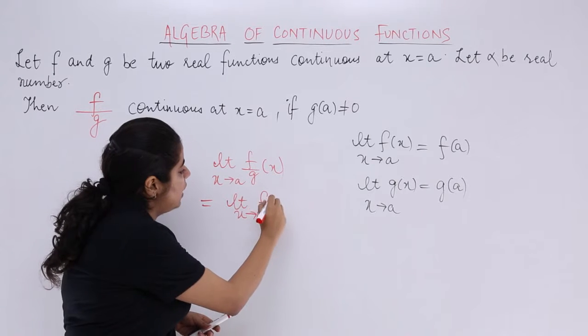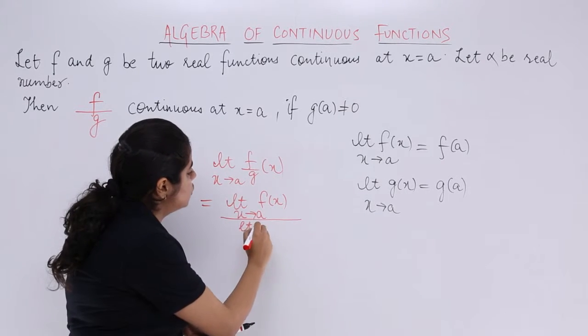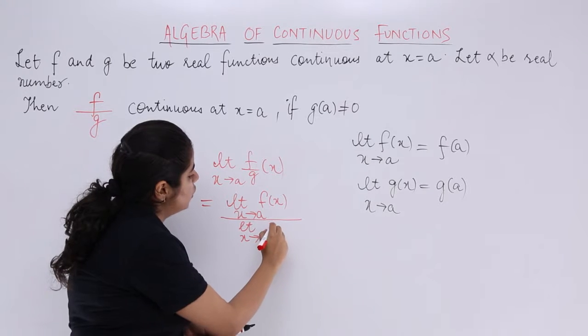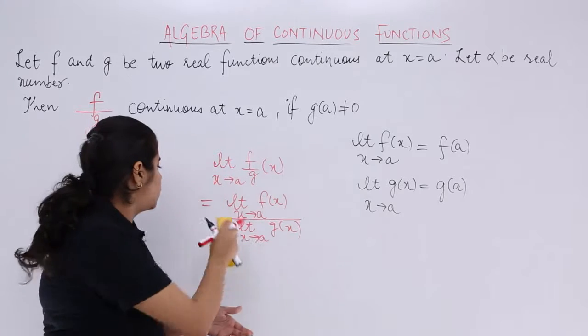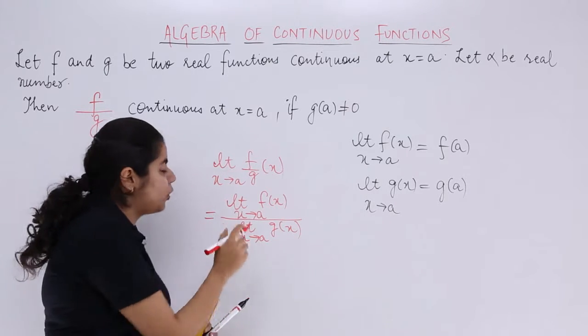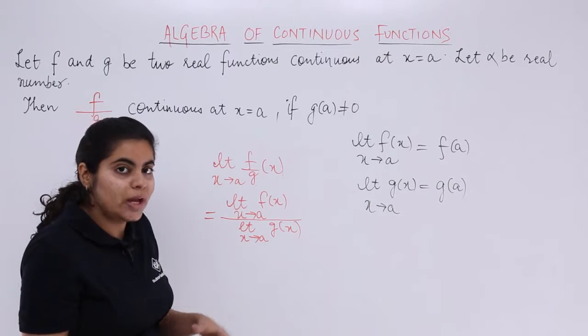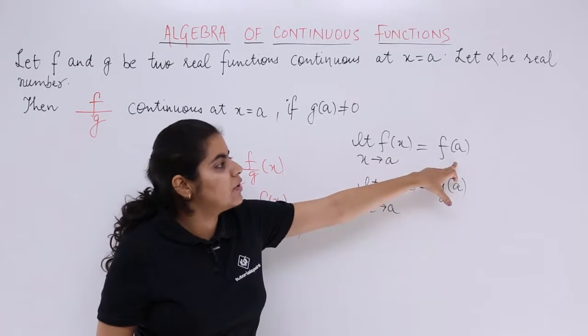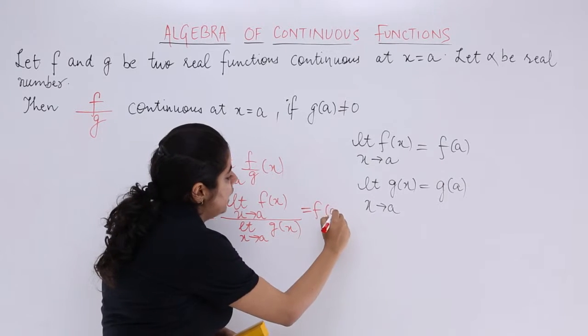So limit x tends to a f(x) divided by limit x tends to a g(x). This is the scenario, let's put equal to here in alignment with the upon sign. Now what is the value of limit x tends to a f(x)? Limit x tends to a f(x) is equal to f of a.